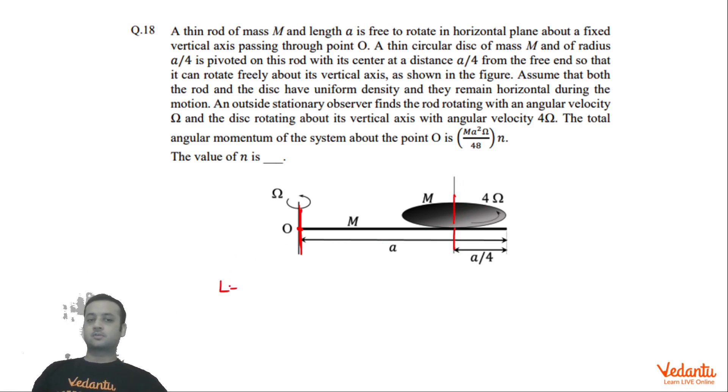Let's write the angular momentum. If you just see the rod, the angular momentum of the rod is Iω about this axis. I will be Ma²/3 × ω, and this will be in the anticlockwise sense looking from the top.